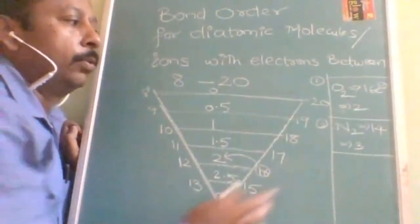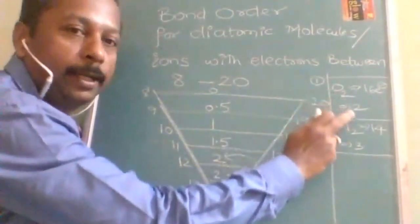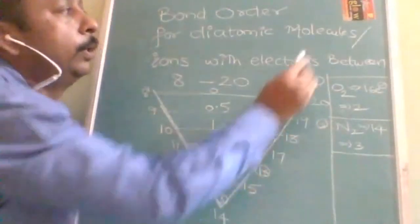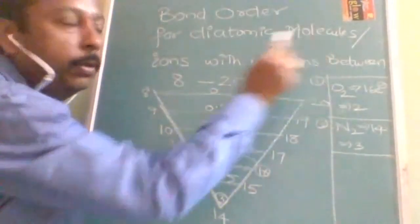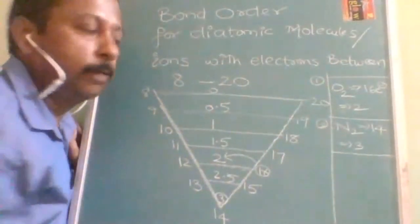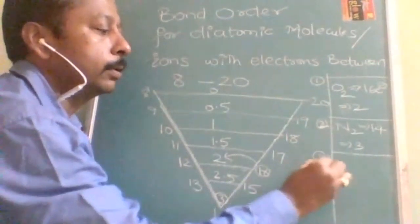Likewise, it is applicable to nitrogen, contains triple bond, that's why bond order 3. Oxygen contains 2 bonds, that's why bond order 2. OK, as I told you here, it is applicable for molecule as well as for ions. Let us see, is it applicable for ions or not? If applicable, then how to use this?